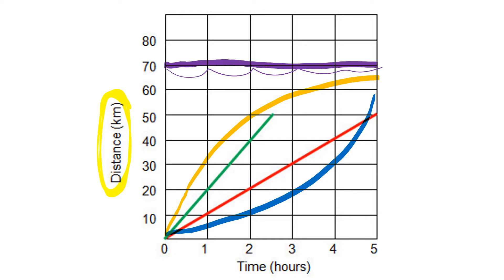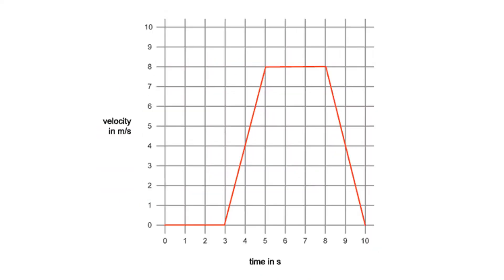Okay, let's look at the next type of graph. So you'll notice that I have velocity, which is basically speed here, okay, on my y-axis.